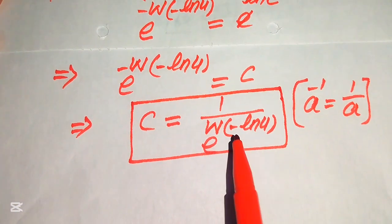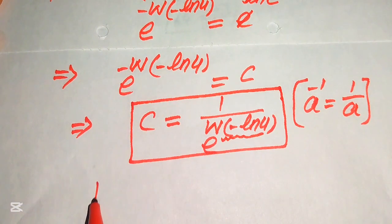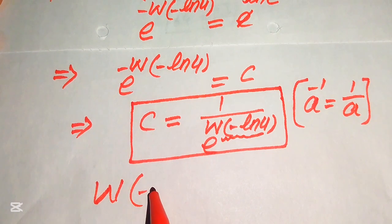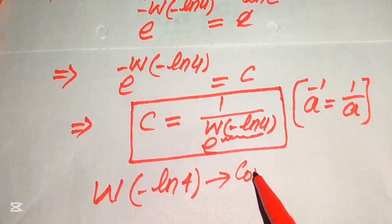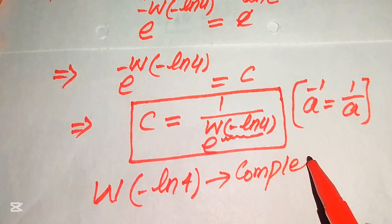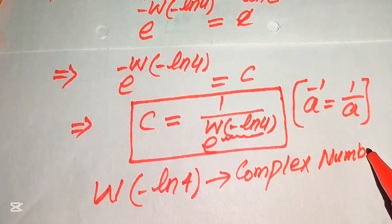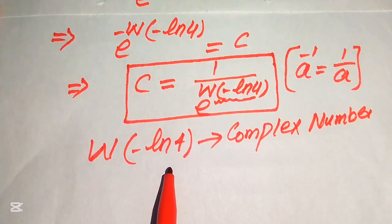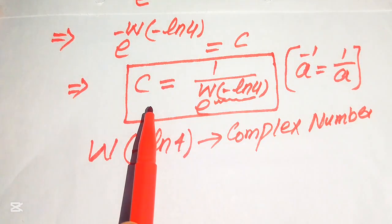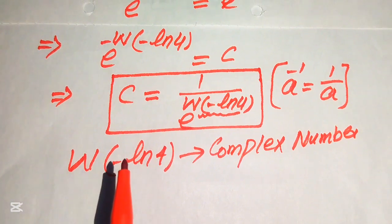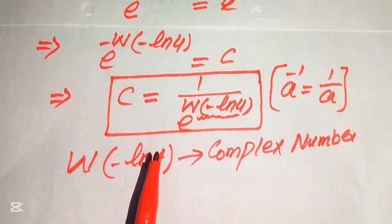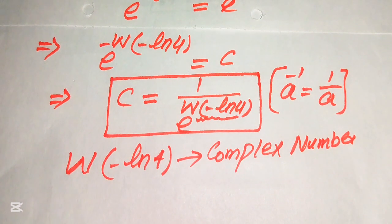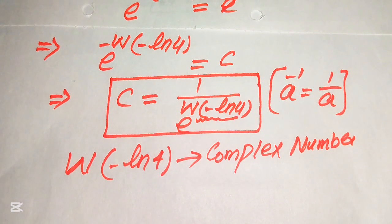One thing to remember is that the value of W of (minus log 4) gives us a complex number. This means that c must be a complex number, which means the solution of the given exponential equation is a complex solution. This is the final answer. Thank you so much for watching this video — please subscribe to my channel for more exciting videos.